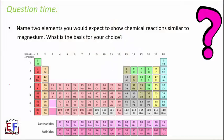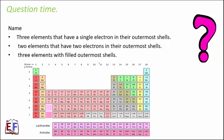Name two elements you would expect to show chemical reactions similar to magnesium. If we expect similar chemical properties, that means we are talking about elements which are in the same group — only then will they have similar properties. Magnesium is in group 2, so any element in this group will do. We could name calcium and strontium, as they all lie in the same group.